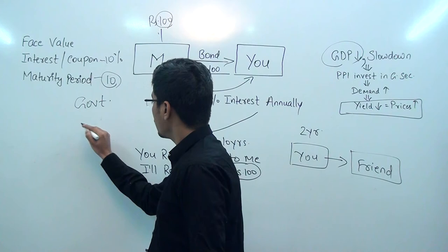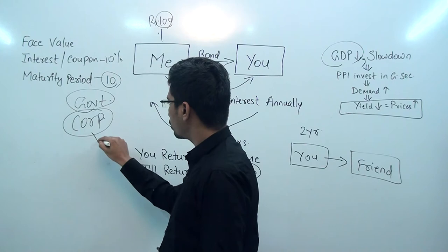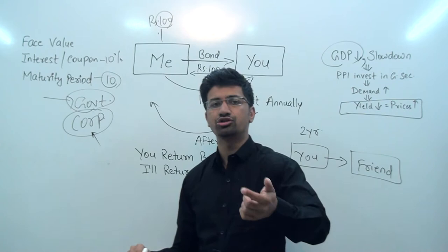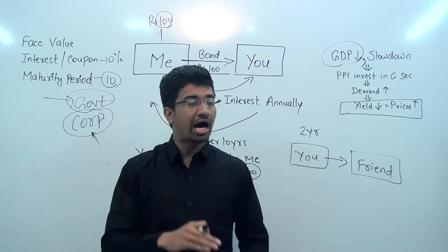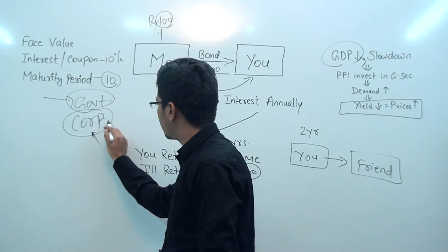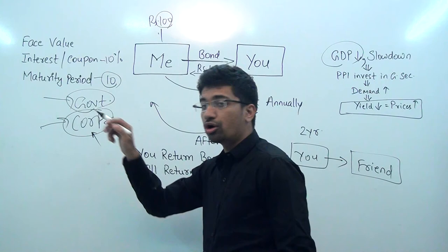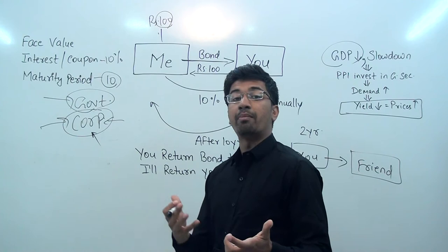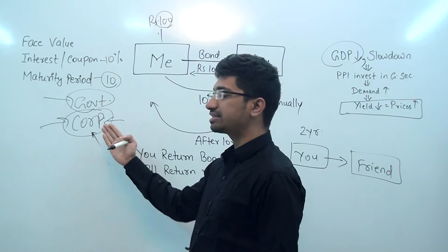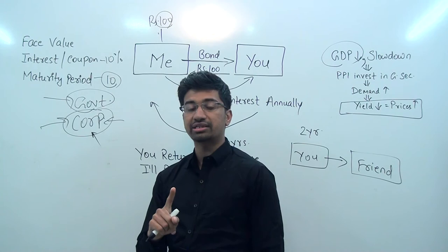During a slowdown, the corporate sector faces risk because it is not performing well. You don't know which company might go down. So trust in the corporate sector falls. People who had invested in corporate bonds start losing confidence and move toward safer instruments. Because you have money to invest somewhere, and the corporate sector doesn't feel right, you look for safe instruments.